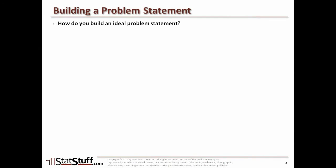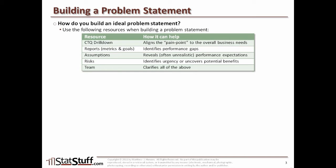Now let's talk about how you can build a problem statement and test its validity. When you want to build a problem statement, there are a few things you can draw on to help you craft that particular statement. For example, you might use a CTQ drill down. This drill down helps you identify where in the business needs and business values you see the particular symptom being felt. That's a great way to identify how you can craft your problem statement and identify the severity of the pain being felt. Also, any existing reports that include metrics, targets, or goals can help in identifying performance gaps.